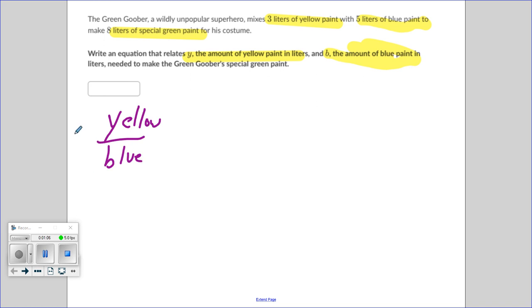We're actually comparing liters of yellow to liters of blue, but for the video, let's use a little shorthand. So we know that three liters of yellow goes with five liters of blue.